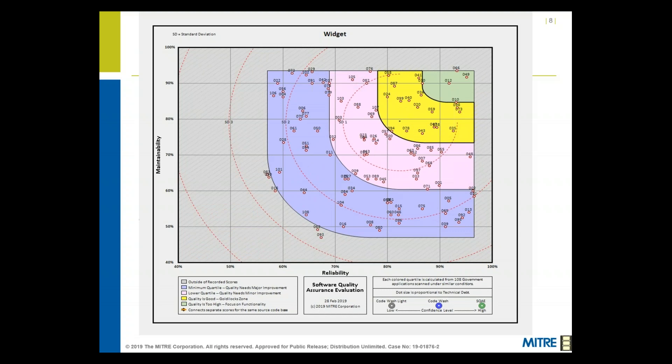This is the actual data that created that corpus — the 108 data points we calculated and laid out, forming this set. You can see some in the green, yellow, pink, and blue zones, and a couple outside the blue zone at the bottom. That's a graphical anomaly — originally the zones were actual squares, and the blue zone extended further down. Being practitioners, we recognize that if you're in the corner of a zone you really belong with the adjacent zone, so we've adjusted the zones to fit what we're seeing in practice.